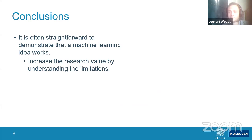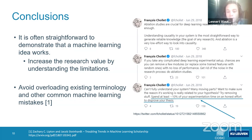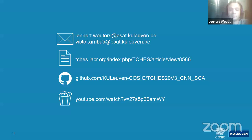Two conclusions for all machine learning papers: it is often straightforward to show that a novel idea works, but research value increases greatly by also understanding the limitations. François Chollet, creator of Keras, recommends spending at least 10% of experimentation time on an honest effort to disprove your thesis. There is also a paper, 'Troubling Trends in Machine Learning Scholarship' by Lipton and Steinhardt, which summarizes common mistakes to avoid.